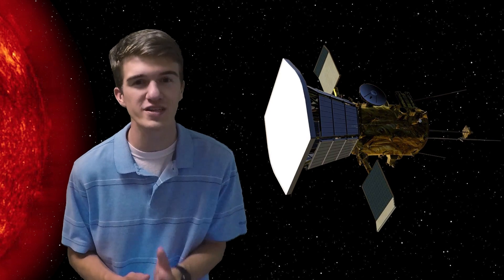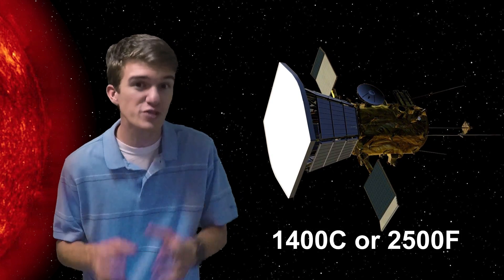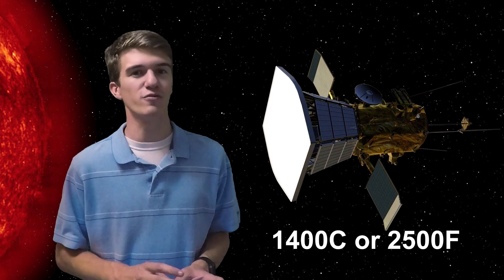But the major temperature issue is the sun itself. They're so close that radiation causes the spacecraft to reach temperatures of almost 1400 degrees Celsius, which is much more reasonable than a million degrees, but still too hot for the electronics.